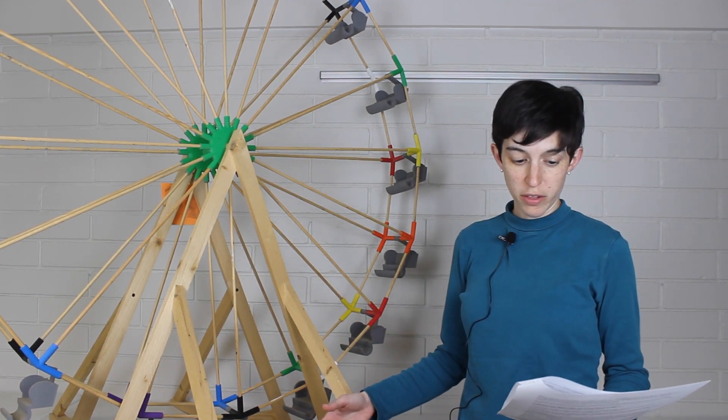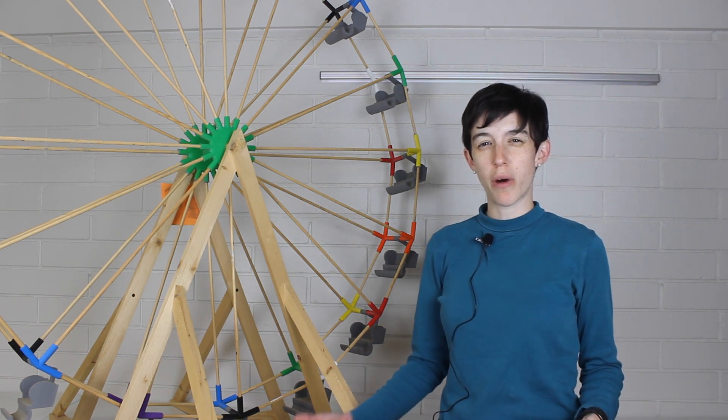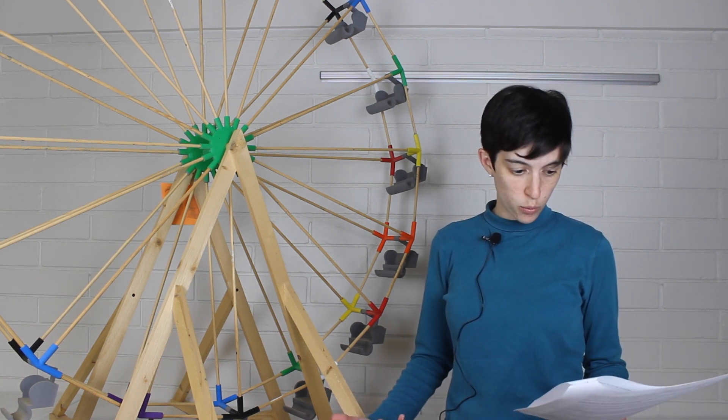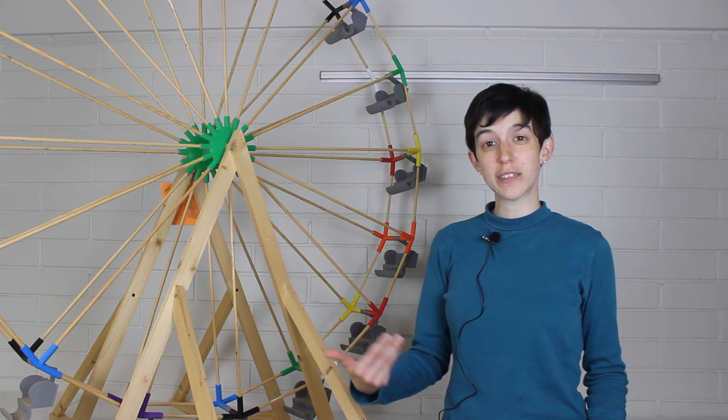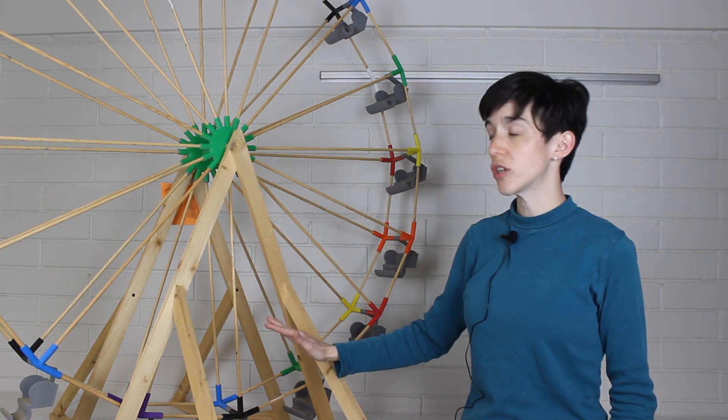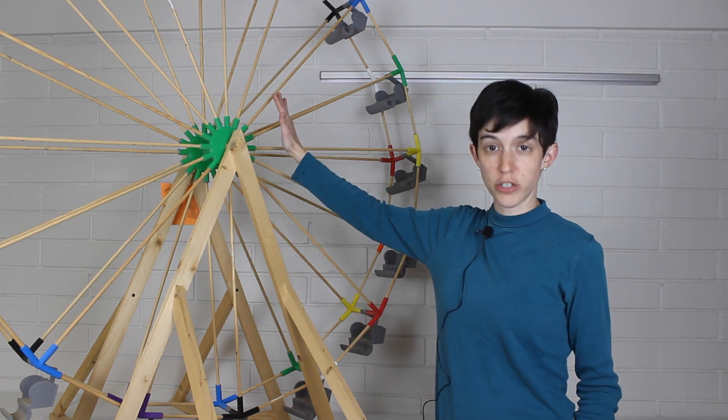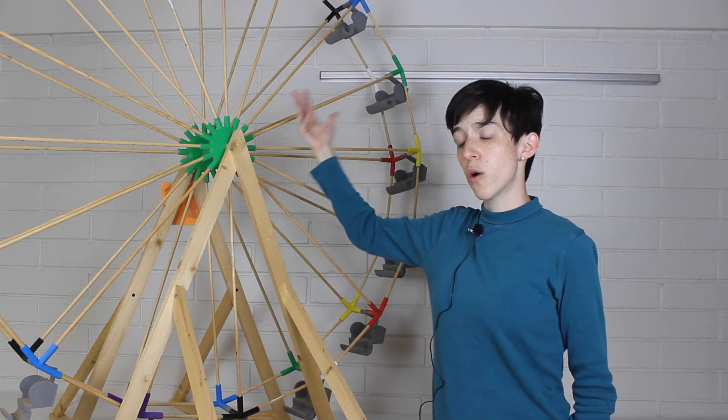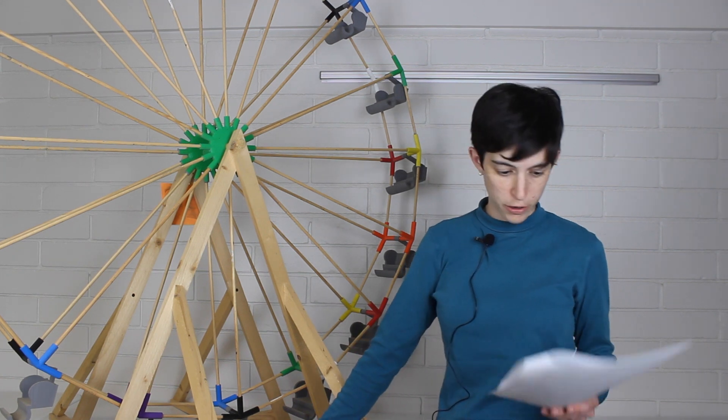As you are moving along the Ferris wheel, you may feel that your body's weight is changing. Your body's apparent weight depending where you're at in the Ferris wheel will change. So if you're at the top of the Ferris wheel, you may feel lighter. When you're at the bottom of the Ferris wheel, you may feel heavier.